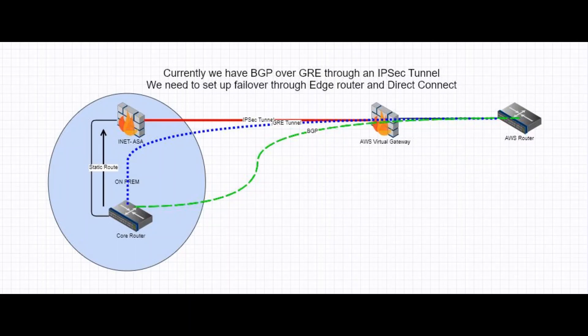The diagram illustrates some of the key technologies and concepts used in connectivity between our on-prem infrastructure and AWS infrastructure.